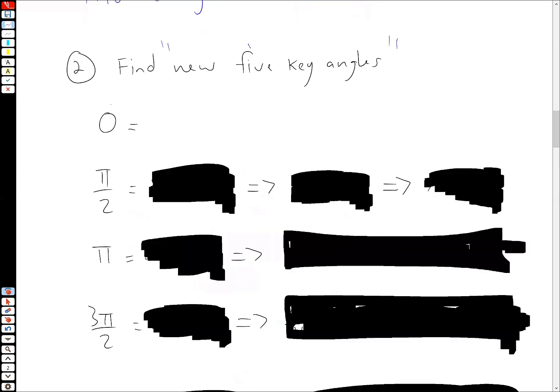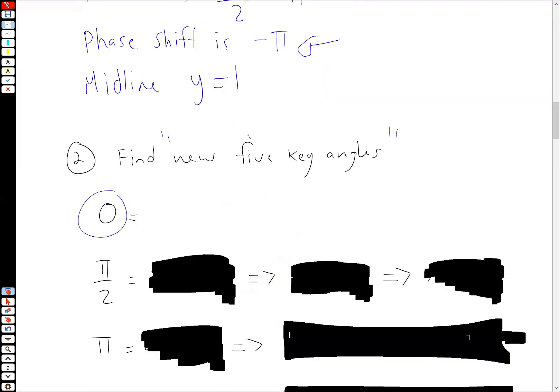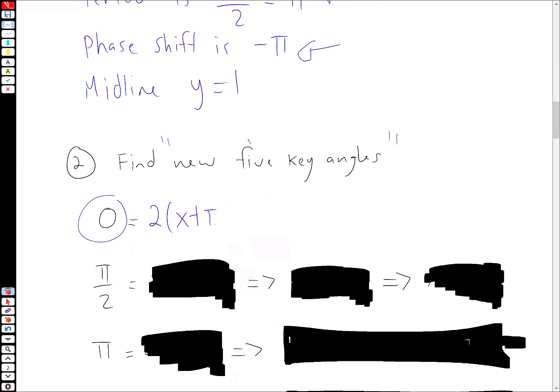So what we're going to do is we're going to take all the old key angles, and we're going to set it equal to the inside of our trig function here. And what that's going to do is it's going to tell us exactly where the old key angles moved to. So again, we're going to take our old key angle. I'm going to set it equal to the inside of my sinusoidal curve. And we're going to solve for X. And again, this is going to tell us where that angle went. It's going to give us a nice new key angle.